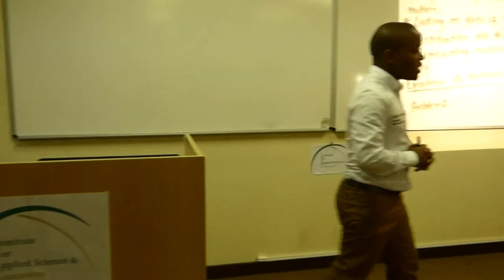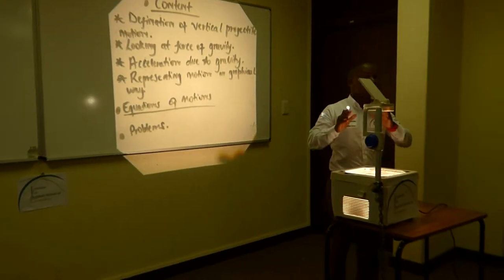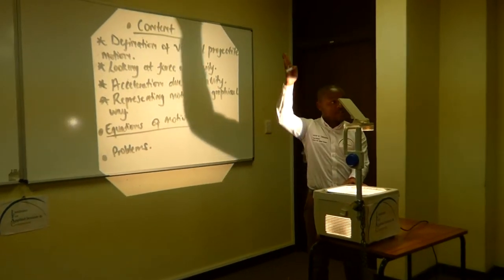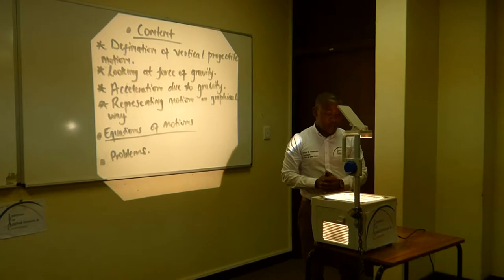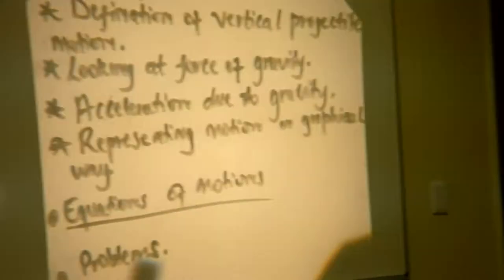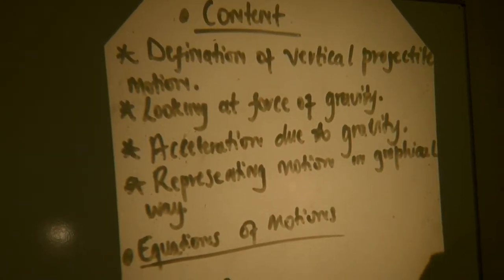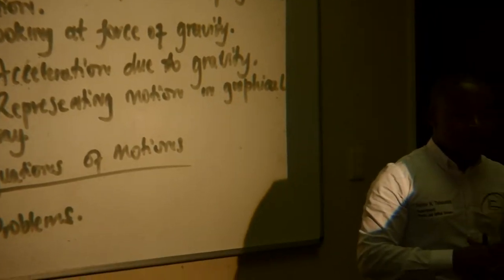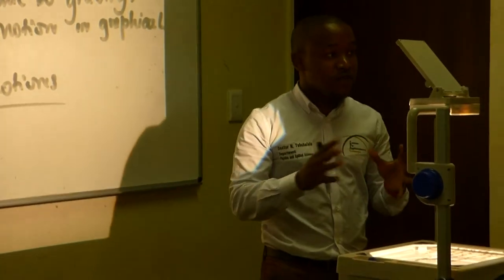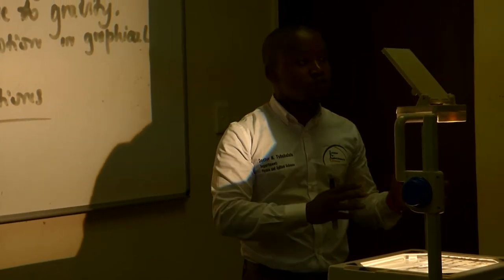It is very important to know that we'll be doing motion in one dimension. I've said that it's the vertical projectile motion, meaning we're going to look at the motion in one dimension, vertically only. Today we're going to look at the definition of the vertical projectile motion, the force of gravity — define it, use an equation for it, and define it using Newton's Second Law.